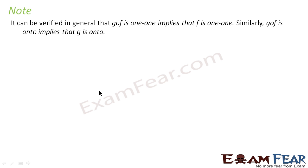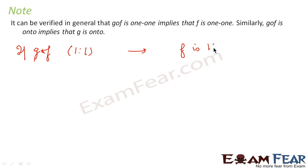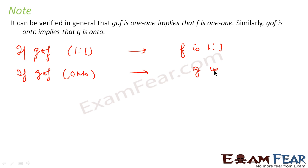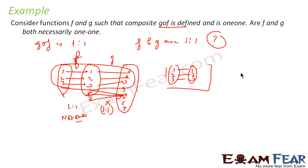Note: it can be verified in general that if gof is one-one, then f is one-one, and g need not be one-one. If gof is onto, then g is onto. This is what we have explained in the previous chapters.